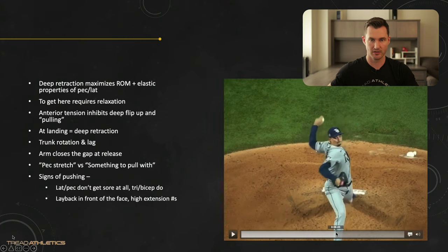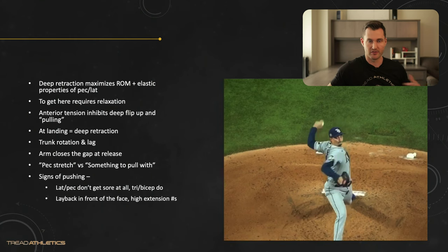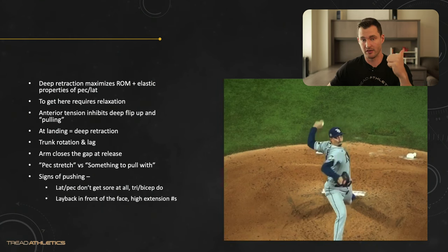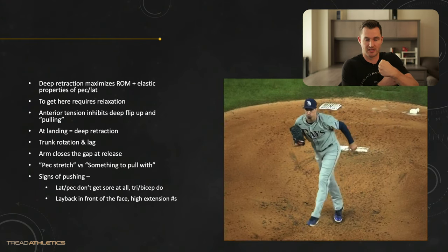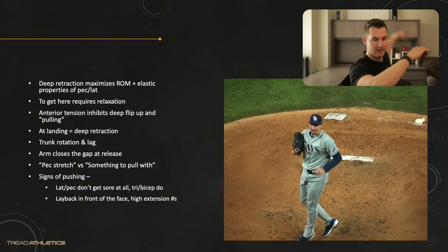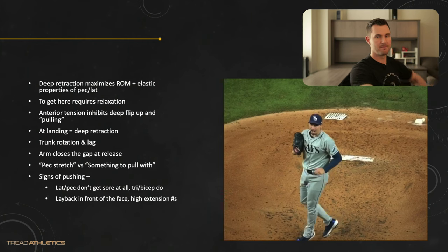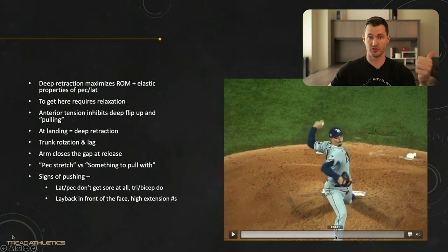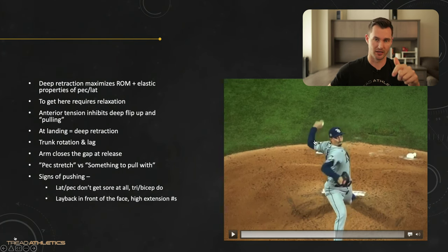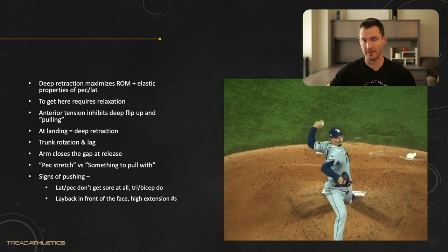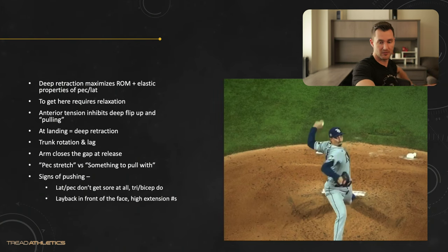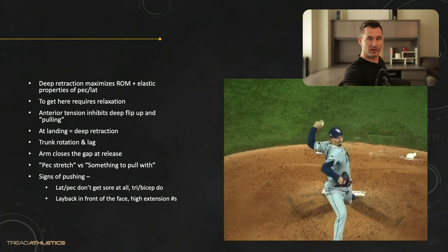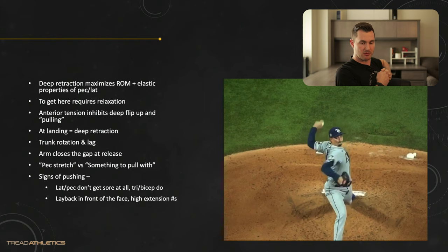That relaxation allows the arm to take its natural pendulum path and get back up behind the midline of the body — that's step one. From there, the trunk goes first. The actual initiation of trunk rotation fires before the arm. The arm is up in a position to accept that rotation and go into layback, but the trunk is the first thing that fires. That creates a pull through the chest, through that arm-side pec, and then a fire — a slingshot. The arm closes the gap from being way back behind the body all the way to release, where the elbow ends up in line with the shoulders.